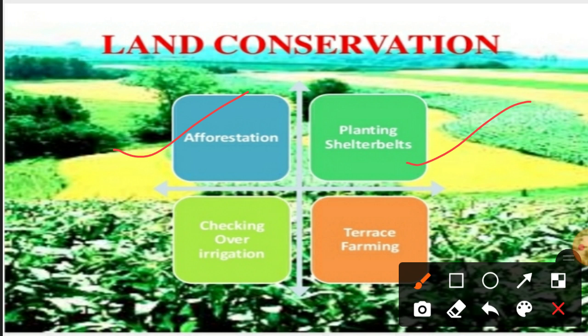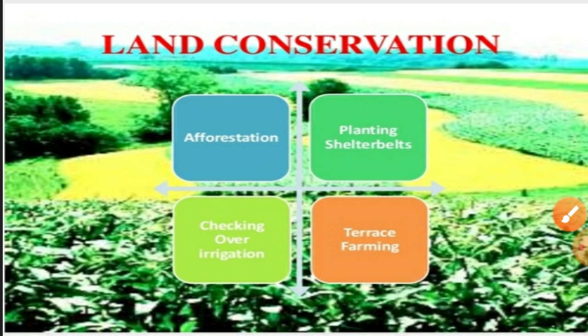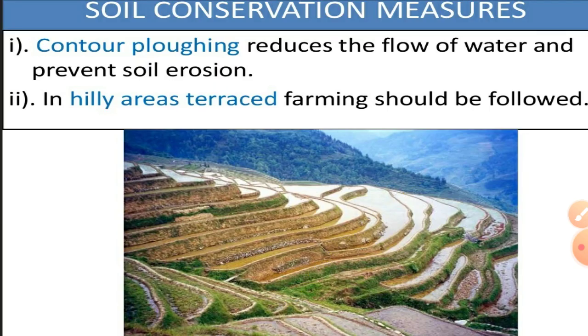Planting shelter belts also reduces soil erosion. Checking over-irrigation is important because over-irrigation makes land acidic, saline, and unfertile. There should also be terrace farming in hilly areas, which helps meet food demand, improves occupational structure in hilly regions, and prevents soil erosion. These are different measures we need to adopt for soil conservation.